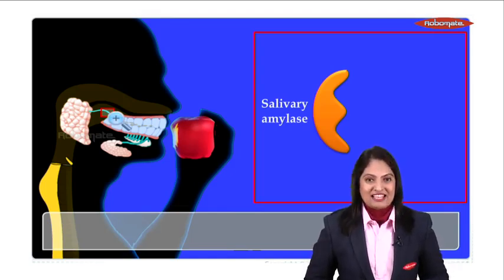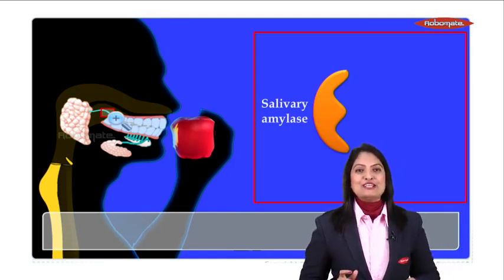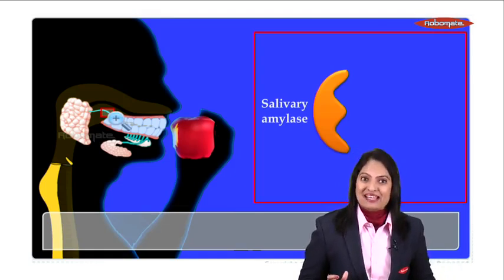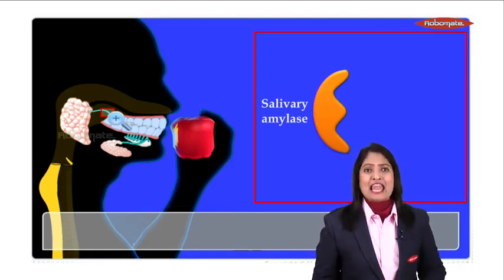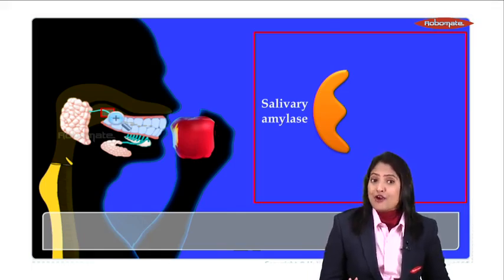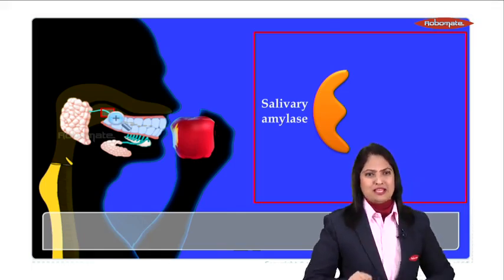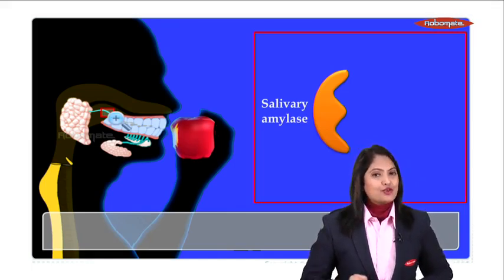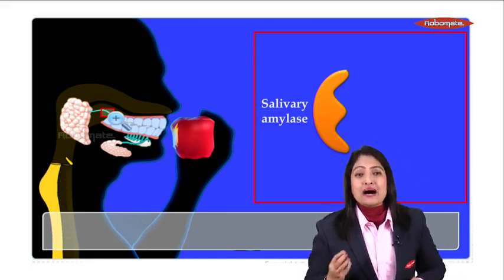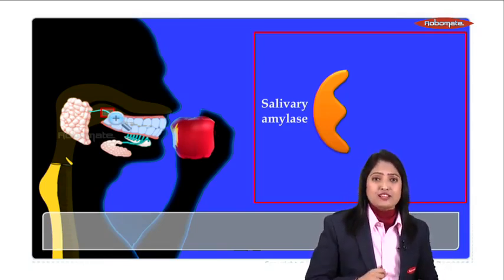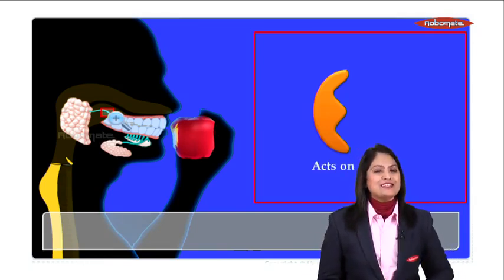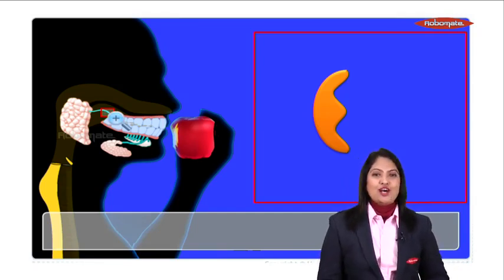Focus on the name, dear students: salivary amylase. Any enzyme that has 'ase' as a suffix is definitely going to break down something in our body. And what is it going to break down? It is going to break down amyl. Amyl means starch, amyl means carbohydrates. So salivary amylase in the saliva acts on one of the major components of the food called starch.